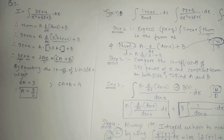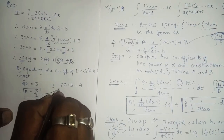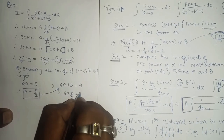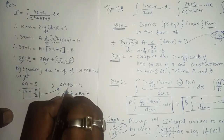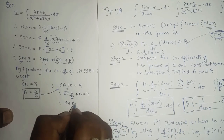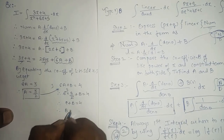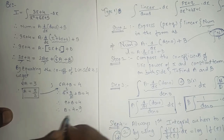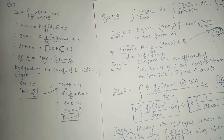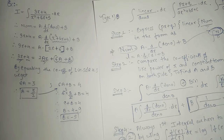Substituting A equals 3 over 2 into 6A plus B equals 4: 6 times 3 over 2 plus B equals 4, which gives 9 plus B equals 4, so B equals 4 minus 9, therefore B equals minus 5. The value of B is minus 5.